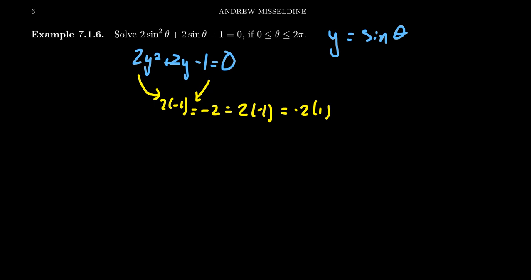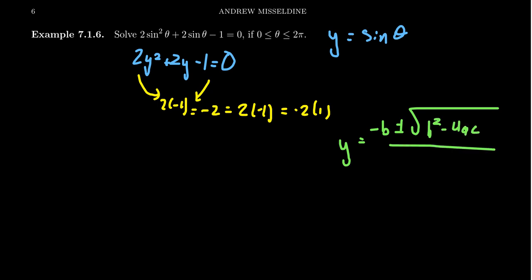Recall how the quadratic formula works: y = [−b ± √(b² − 4ac)] / (2a). If you have trouble memorizing it, you can recite it to the tune of 'Pop Goes the Weasel.' We're solving the general polynomial ay² + by + c = 0, where a is the coefficient of the quadratic term, b is the coefficient of the linear term, and c is the constant. Applying this to 2y² + 2y − 1 = 0, we have a = 2, b = 2, c = −1.